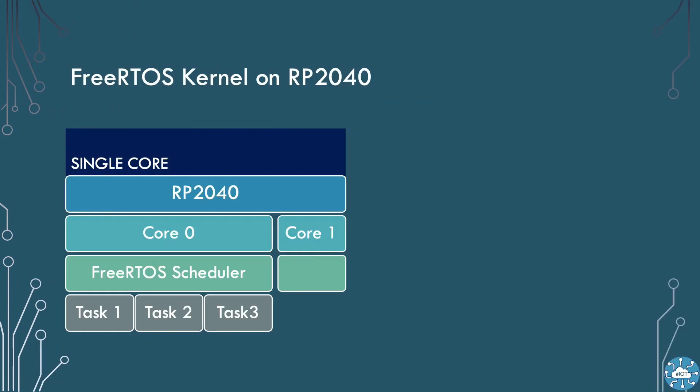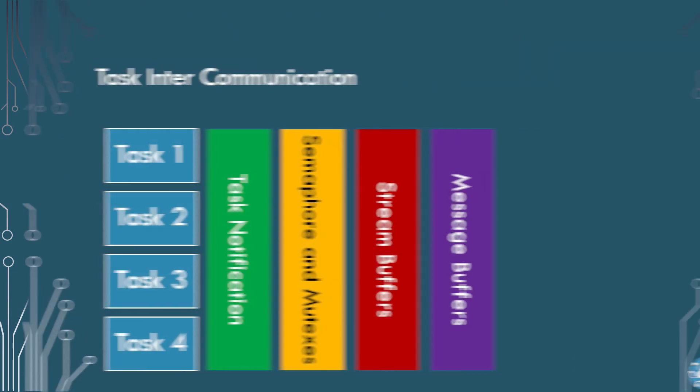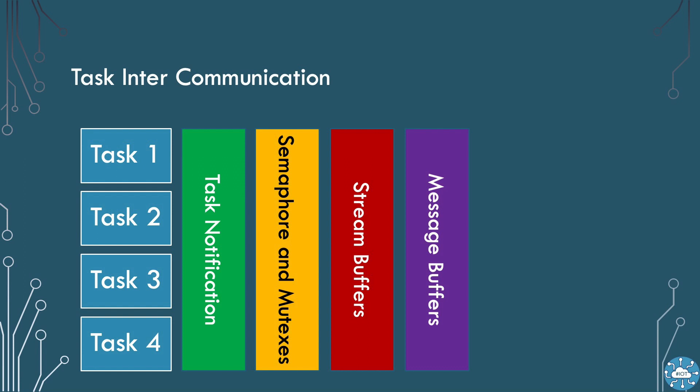FreeRTOS kernel allows us to expand our RP2040 to run more tasks. In a singular core model, we can run the scheduler on core zero and then run multiple tasks on that same core. The creation and management of the tasks is fairly simple with FreeRTOS. The framework also provides mechanisms for the tasks to communicate: task notification, semaphores, or buffers.